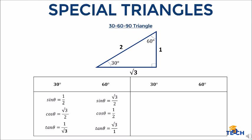For 60 degrees: sine theta is square root of 3 over 2. Cosine theta is equal to 1 half, or 1 over 2. And tangent theta is equal to square root of 3 over 1.